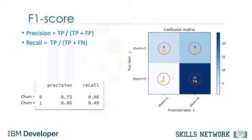So, we can calculate the precision and recall of each class. Now we're in the position to calculate the F1 scores for each label, based on the precision and recall of that label.